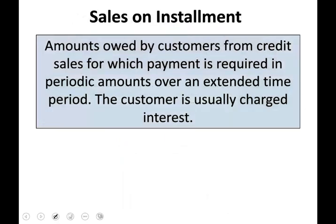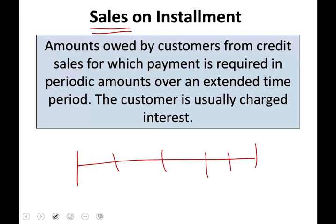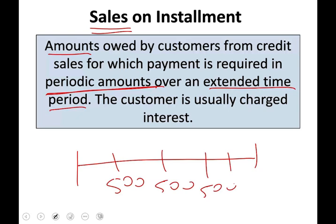Last but not least in this session is sales on installment. What is an installment? Every time you hear the word installment, it means you have a series of payments — usually the same amount. When you have a loan, you make installments. Amounts owed by customers from credit card sales for which payment is required in a periodic amount over an extended time — for example, you pay $500 every month. The customer is usually charged interest included in the amount. Think about when you buy a car: you make the same payment every month — $450, $500, $700, whatever that payment is. That's why we call it installment: the same amount over an extended period of time.